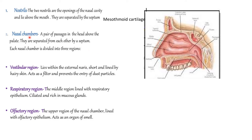After the nostril, there is the nasal chamber, which lies above the palate. It is divided into three regions: the vestibular region, followed by the respiratory region, and then the olfactory region. The vestibular region contains hair which helps in preventing dust particles from entering the respiratory system. The respiratory region is lined by respiratory epithelium, and the olfactory region is lined by olfactory epithelium which acts as an organ of smell.